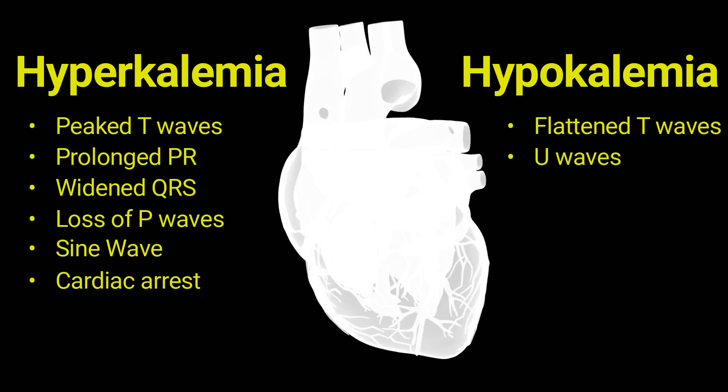With further potassium depletion, small deflections known as U waves may appear immediately following the T waves. U waves can be mistaken for T wave inversions if they become larger. The ST segment, which connects the QRS complex to the T wave, may also show a downward shift or depression.